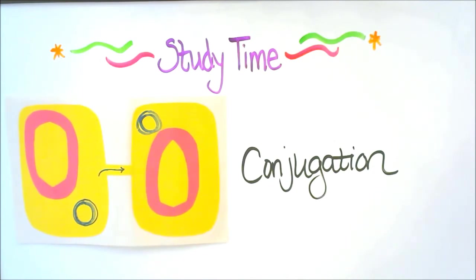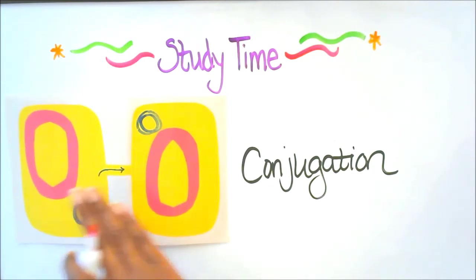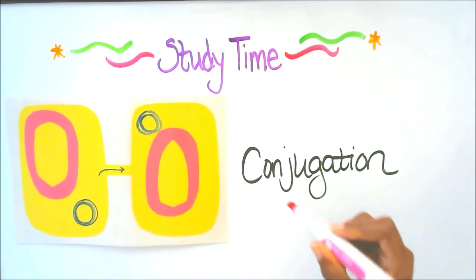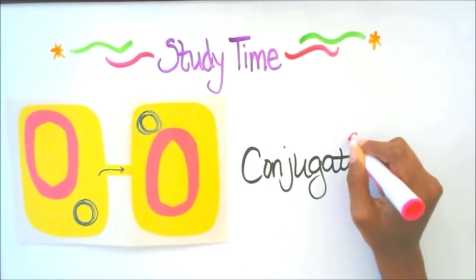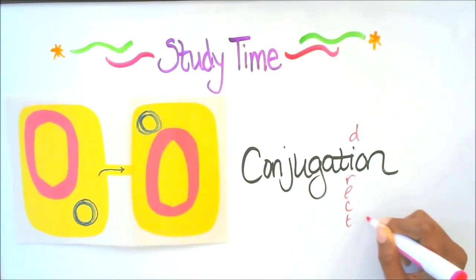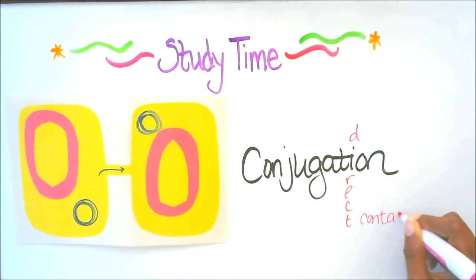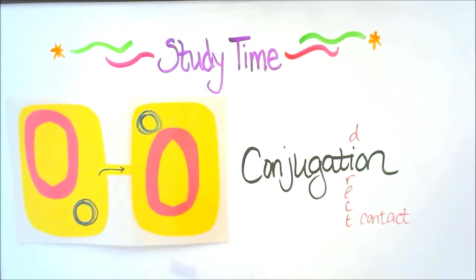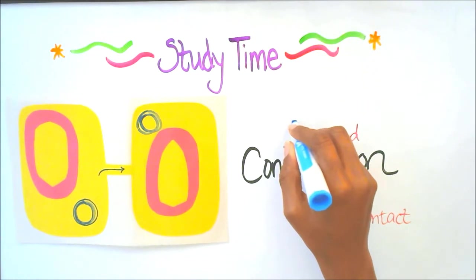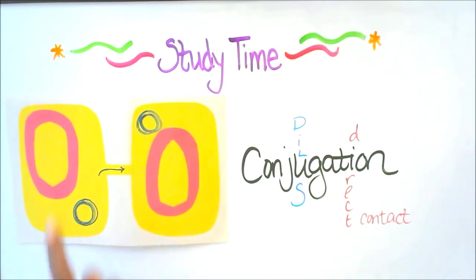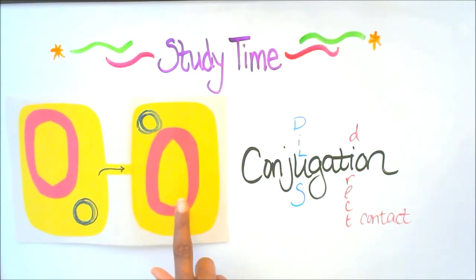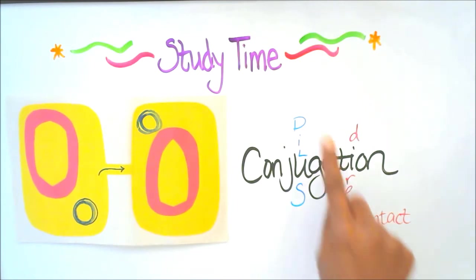Conjugation: it's the transfer of genetic material from one bacterium to another through direct contact. We use the 'I' for direct and then contact. That direct contact is the pili, and we use the 'U' for pili. So conjugation is the transfer of genetic material — the plasmid — from one bacterium to another through direct contact using pili.